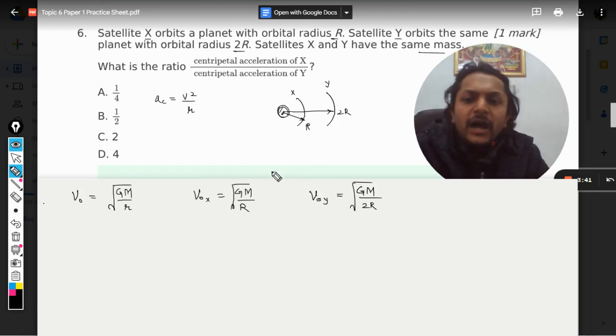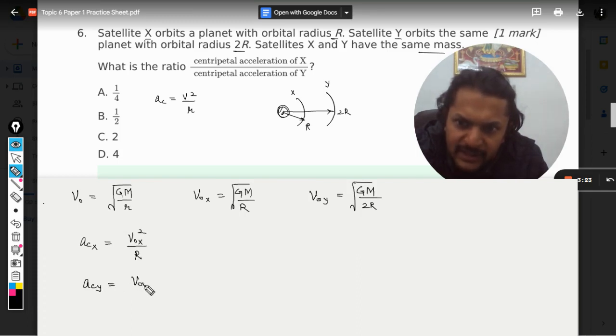Now we need to substitute v square. So what we can do is we can create two more expressions. The centripetal acceleration for X will be given by v not x square divided by r, and the centripetal acceleration for Y will be v not y squared divided by 2r, and we want the ratio x by y.